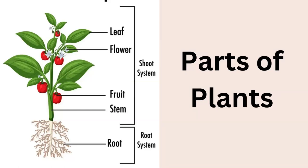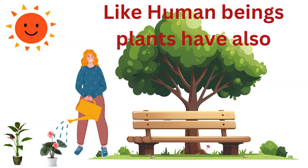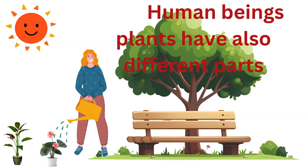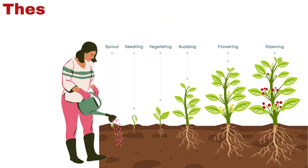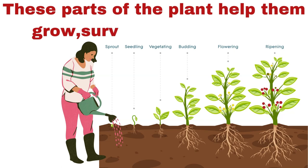Parts of plants. Like human beings, plants also have different parts. These parts of the plants help them grow, survive, and reproduce.